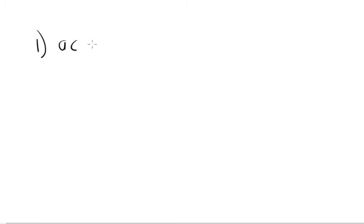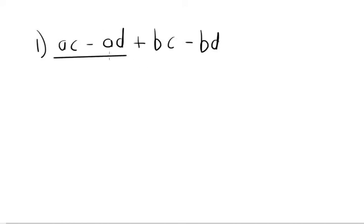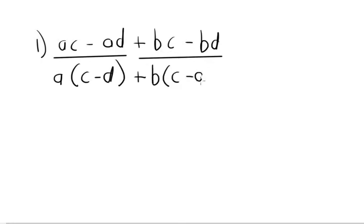Let's have a look at the answers, starting with number 1: ac minus ad plus bc minus bd. Group the first two and last two terms. We take out a as a common factor from the first group, leaving c minus d. Then take out b from the second group, leaving c minus d. So the highest common factor is c minus d, giving the answer (c minus d)(a plus b).